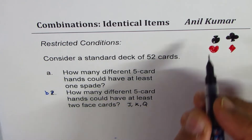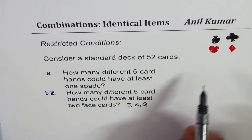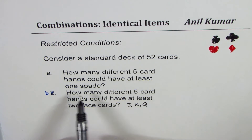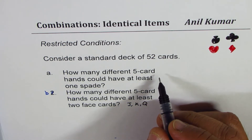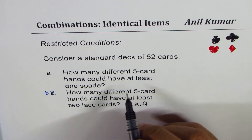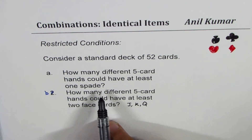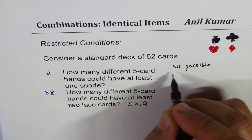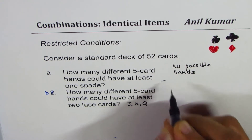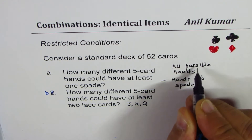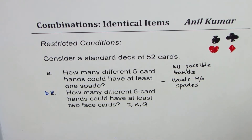So for Part A, how many different five card hands could have at least one spade? At least one spade means we are looking for a hand which has one spade, two spades, three spades, four spades, or all five spades. An alternate, very effective way of doing this is: find all possible hands and from them take away hands without spades.